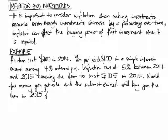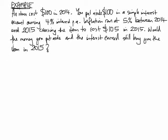To show an example of that working, let's consider that item again from 2014 — it was $100. Let's say you put aside $100, made an investment, put it into a simple interest-earning account that earns 4% interest per year. So that is giving you 4% of what you initially put in every year. Inflation ran at 5% between 2014 and 2015, causing the item to cost $105 in 2015. Would the money you put aside and the interest earned in that account still buy the item in 2015?